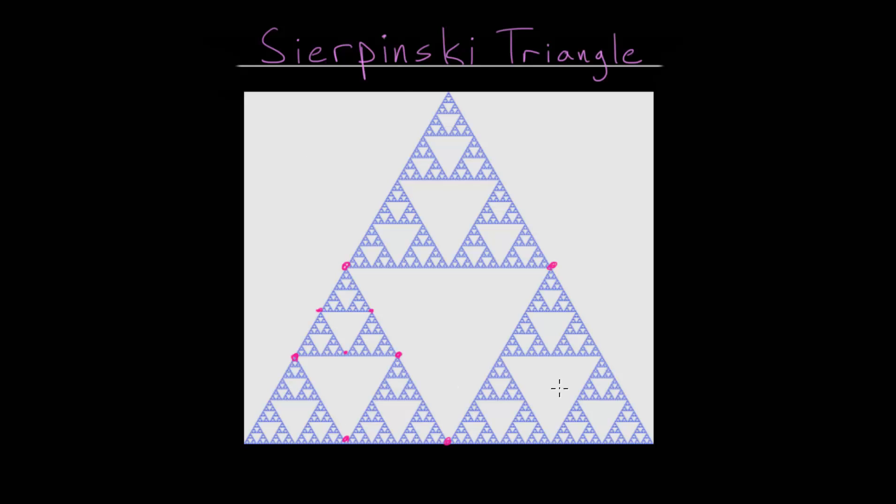And one of the interesting properties of this triangle is that after carrying this out to infinity, if we tried to find the area of this triangle, tried to calculate how much space the triangle takes up after all of these middle triangles were removed, we would find that the area is equal to zero. There is actually no area remaining.